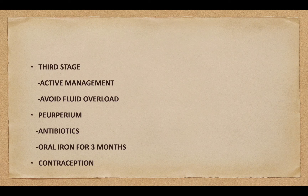Contraception advice should also be given to the patient. Barrier methods of contraception and progesterone-only pill can be advised after 3 weeks of delivery. Intrauterine contraceptive device can also be advised. In case of second gravida, permanent method of sterilization should also be advised.